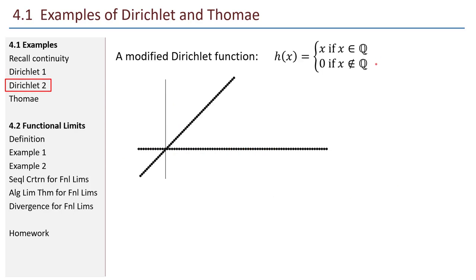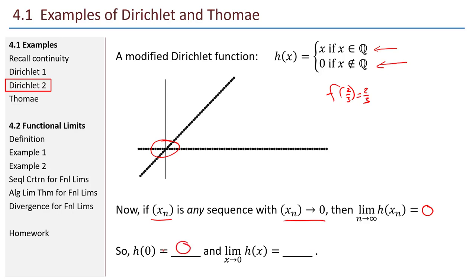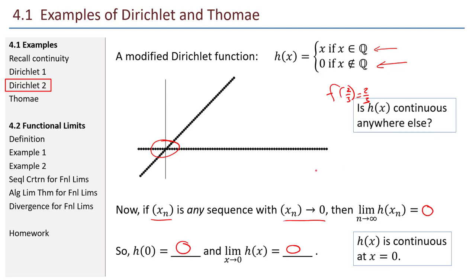Here's a modified version of the function. If I put in an irrational I get 0, but if I put in a rational it spits back the same rational I plugged in — so f of 2/3 equals 2/3. Something interesting is going on right around x equals 0. If x_n is any sequence that converges to 0, the limit as n goes to infinity of h(x_n) is 0. And in fact h of 0 equals 0, and the limit as x goes to 0 of h of x equals 0 — these two match. So h of x is continuous at x equals 0. Weirdly, this modified Dirichlet function is continuous at exactly one point, namely 0.